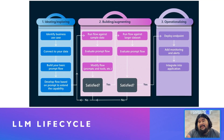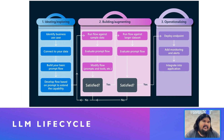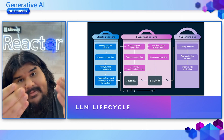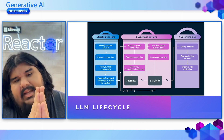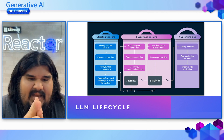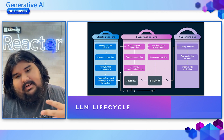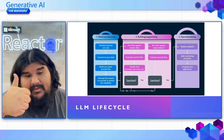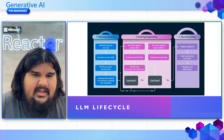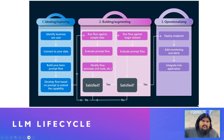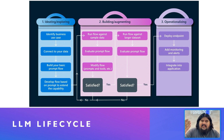Here you can see a more complex infographic. We have: identify the business use case, connect the data, build your prompt flow. Develop the prompt flow based on prompt capability to see if it's doing correct — checking if the data you have can work with the flows. Then you run tests, evaluate if the prompt flow works, and modify as needed. If everything goes well, deploy your endpoint; if not, modify your flow to get better results. Then add monitoring and integrate it to your application.